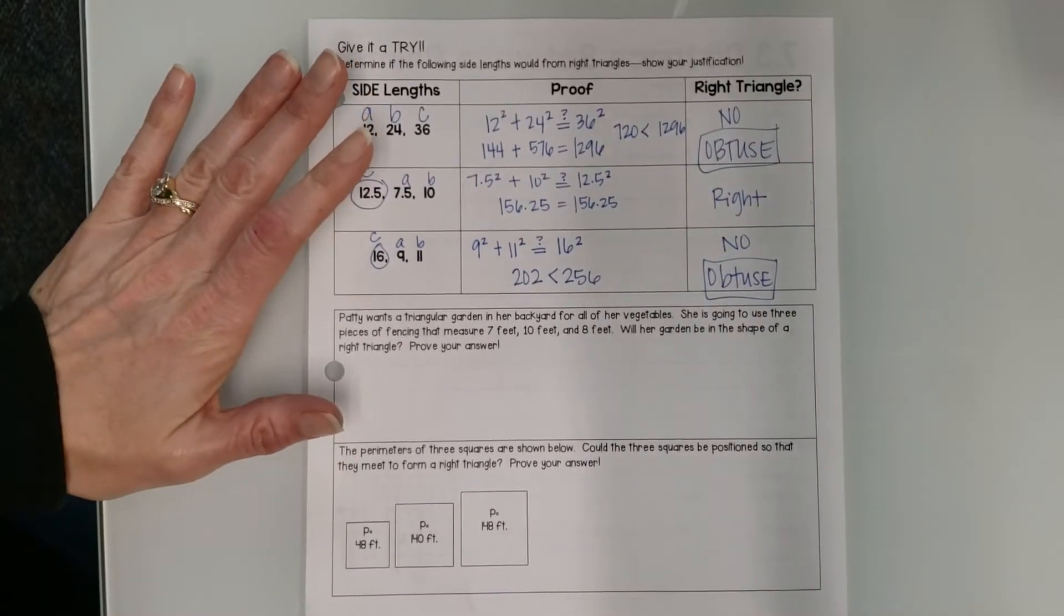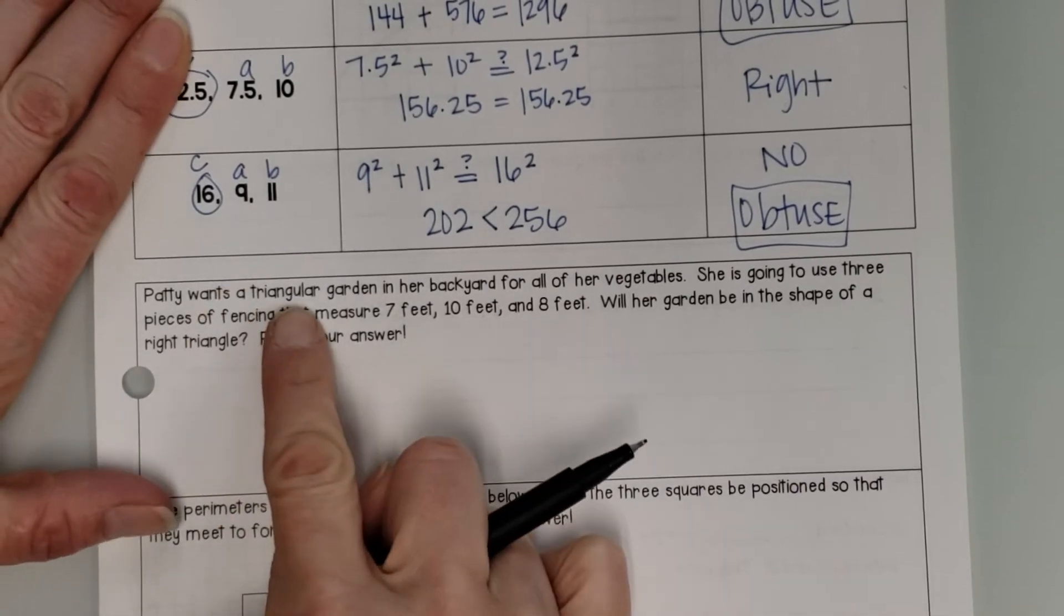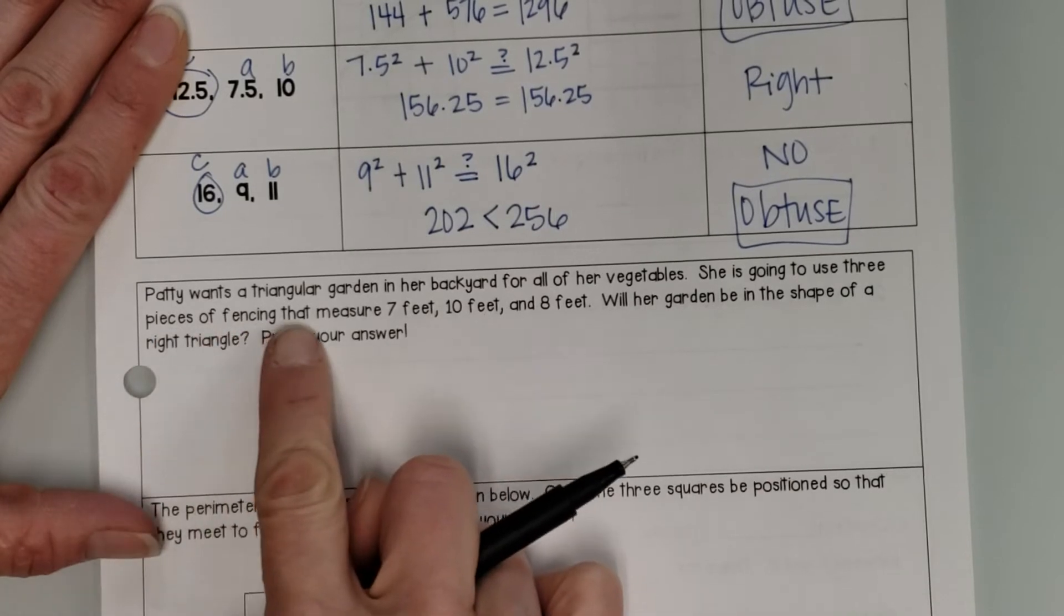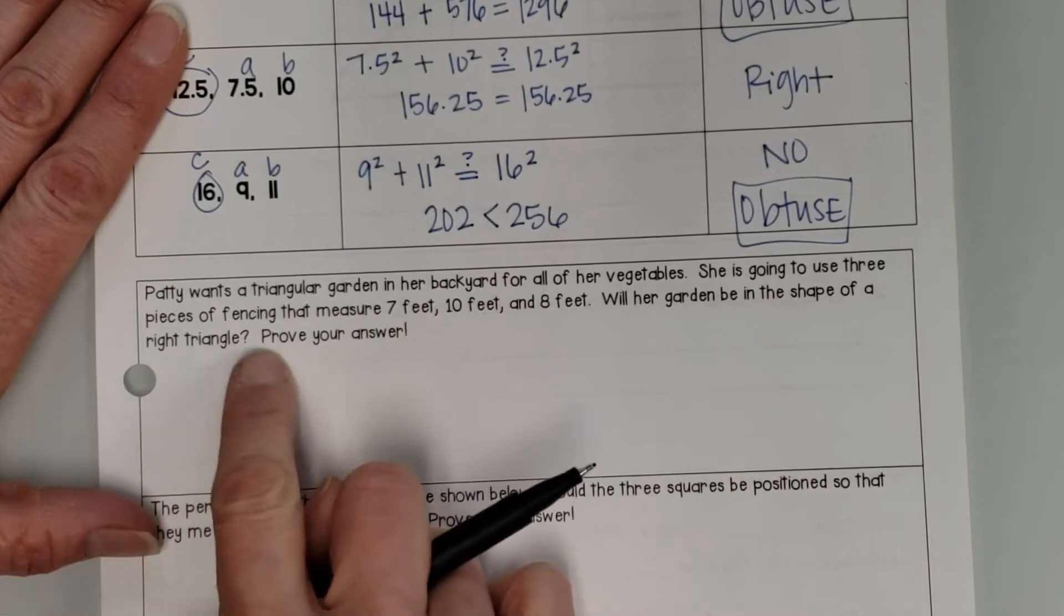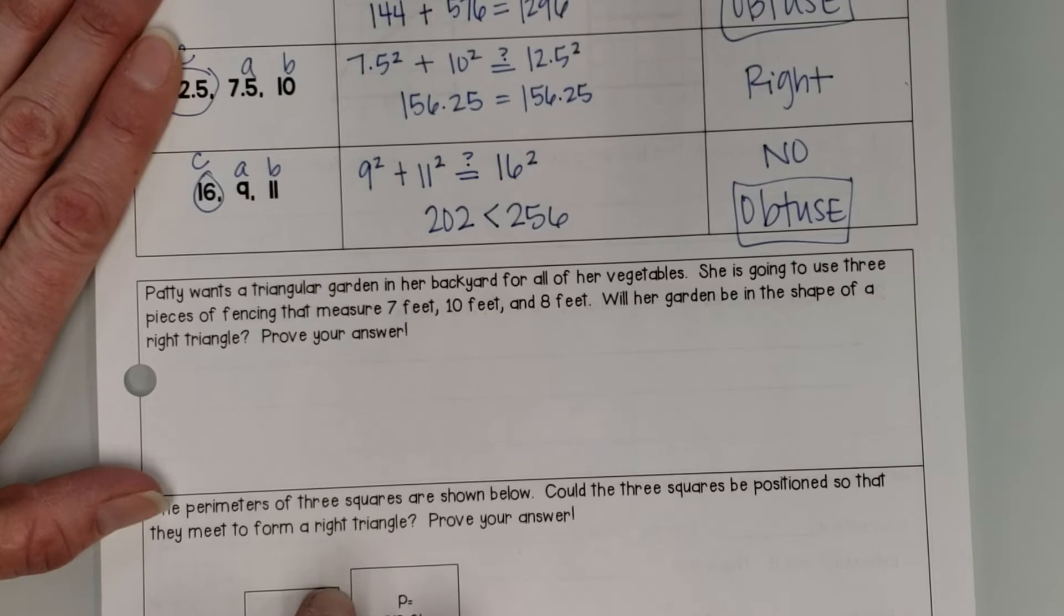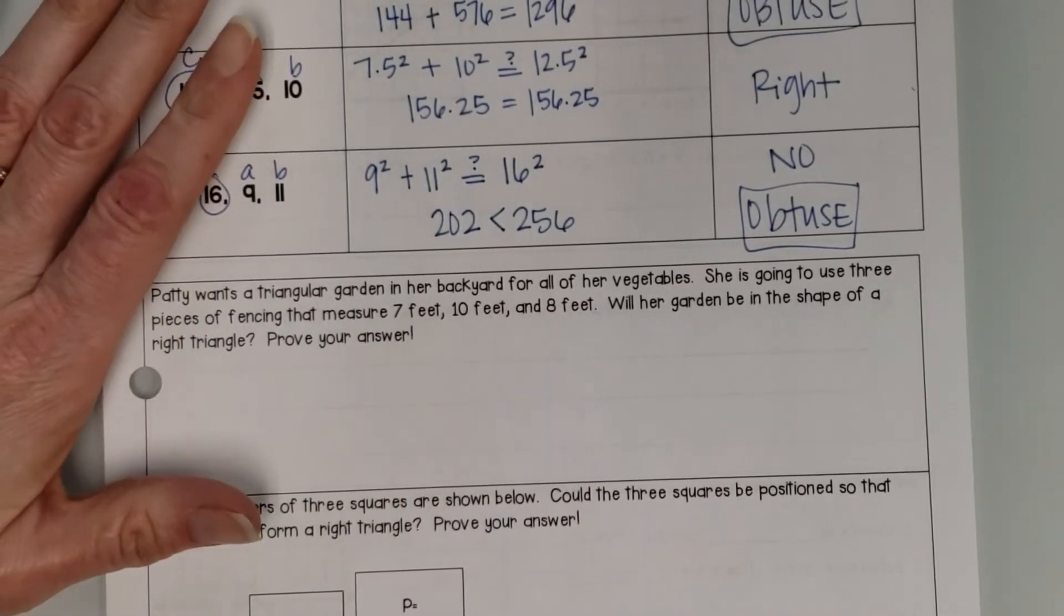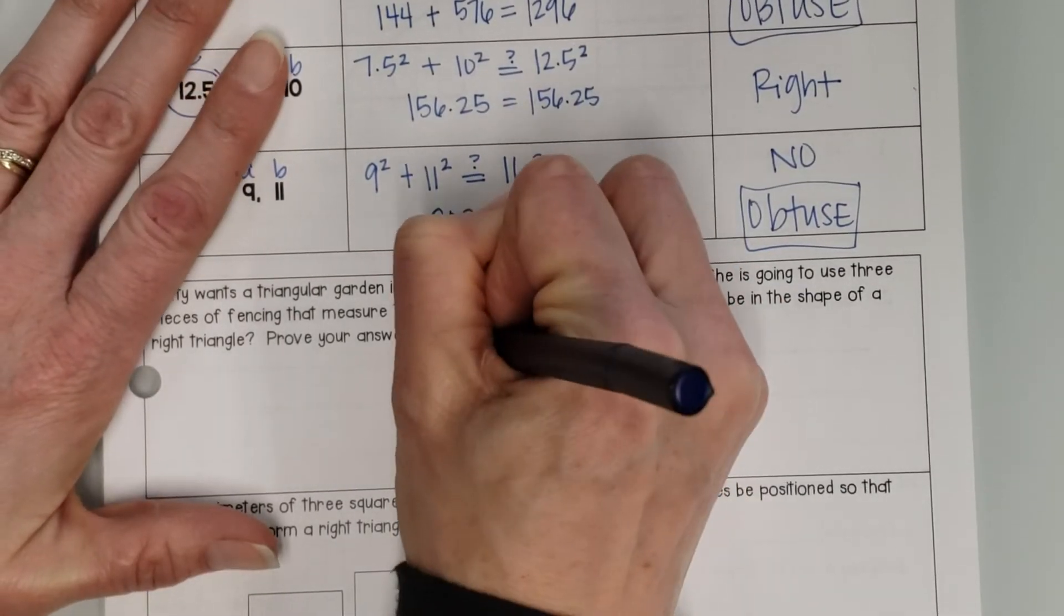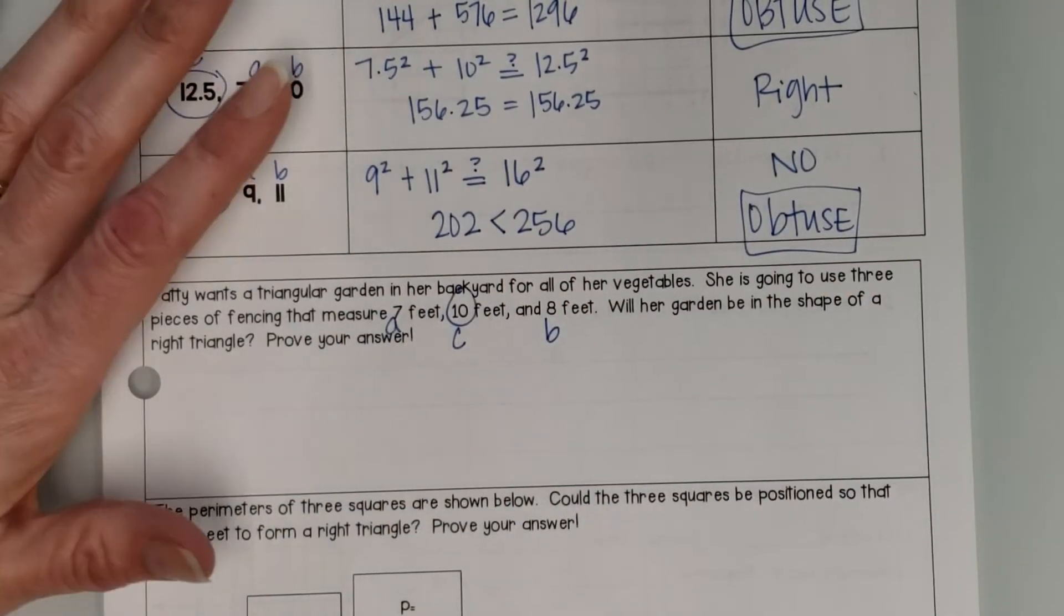Okay, all right, let's talk about this one right here. It says that Patty wants a triangular garden in her backyard for all of her vegetables. She's going to use three pieces of fencing that measure 7 feet, 10 feet, and 8 feet. Will her garden be in the shape of a right triangle? Prove it. So here's our side lengths of our triangle. We just need to figure out which one is C. Again, they're not in numerical order, so you've got to find the biggest one, which is 10. Okay, so that one's going to be C, and then we can make 7A and 8B or flip them.